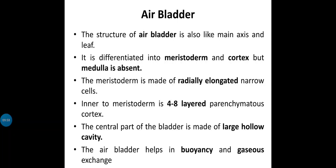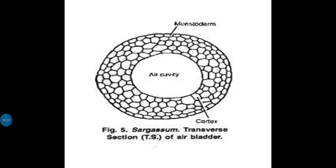The air bladder helps in buoyancy and gaseous exchange. Gaseous exchange — the gas exchange takes place easily. Buoyancy means the capacity to float on the water surface. So what gives Sargassum buoyancy to float on water bodies? The answer is the air bladder. The outermost layer is meristoderm, then 4 to 8 layers of cortex made of parenchymatous cells, and in the center is the hollow air cavity, which gives buoyancy to Sargassum.